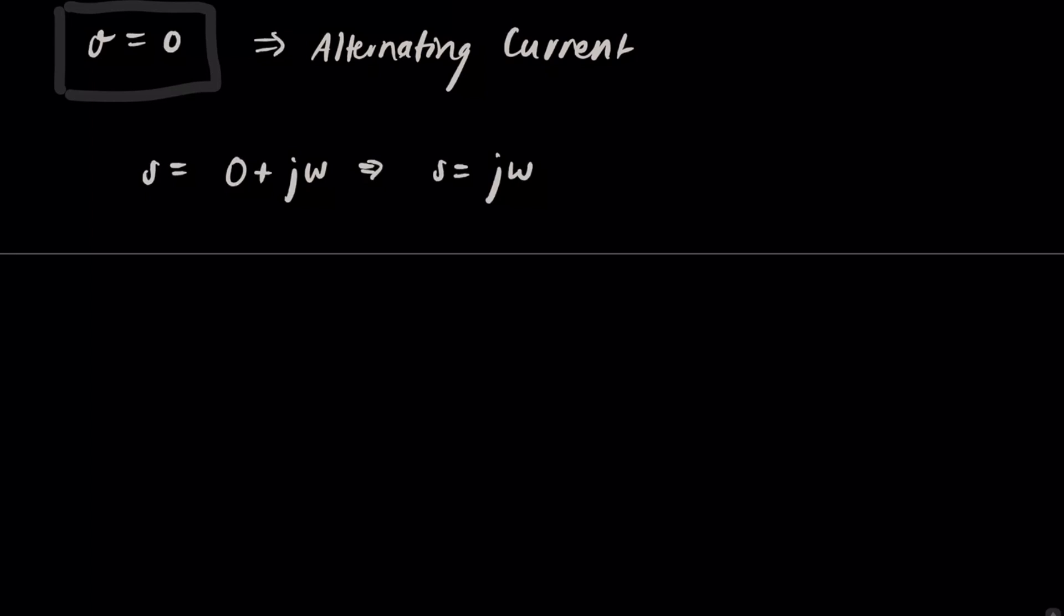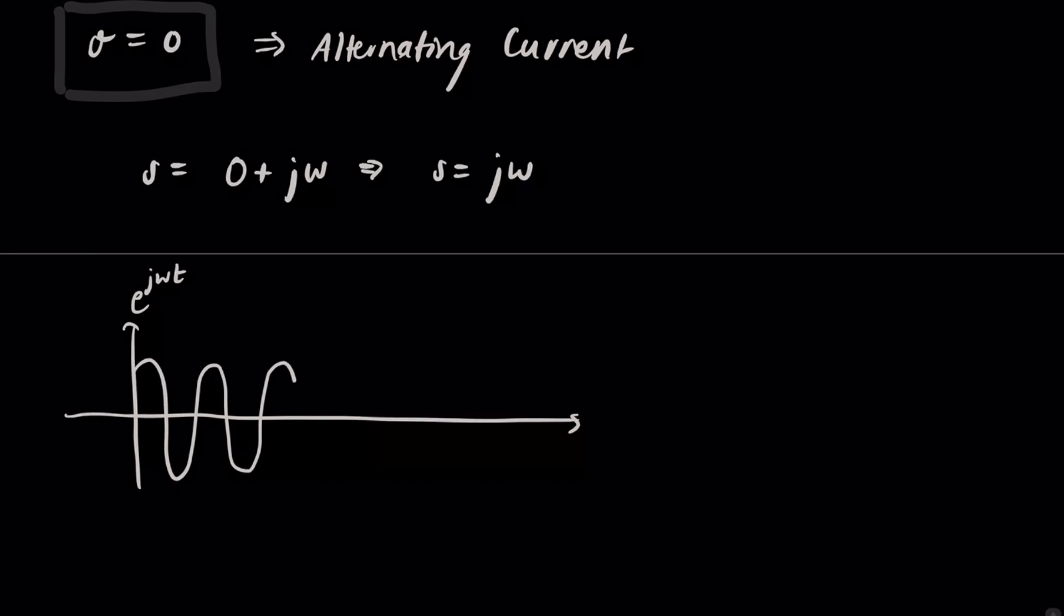Now, if we plot that, we said before omega is constant. So we get e j omega t up here. And then we get just a sinusoid.